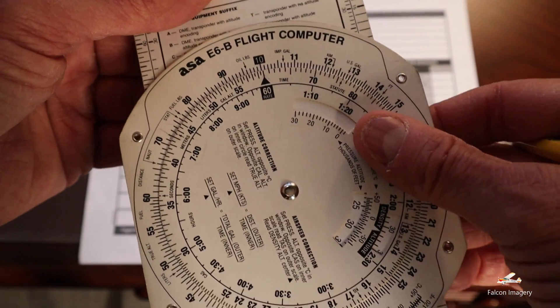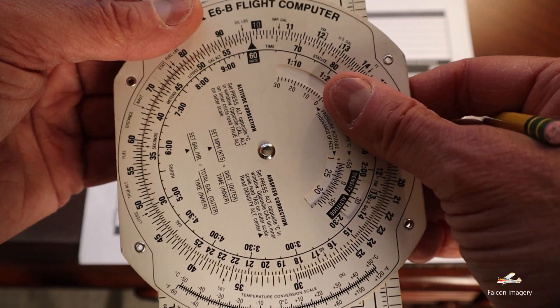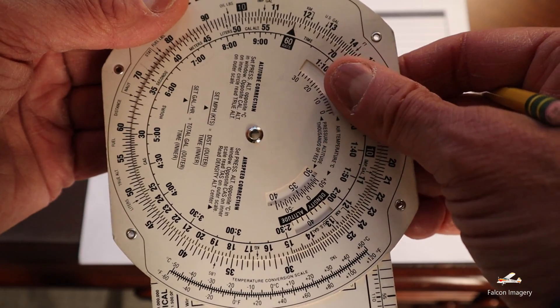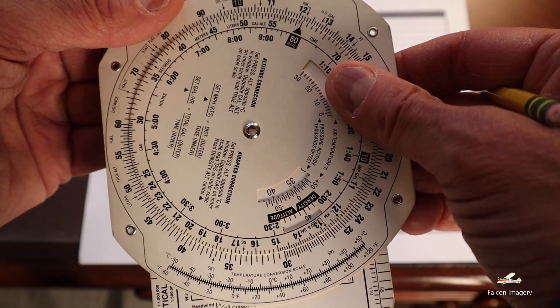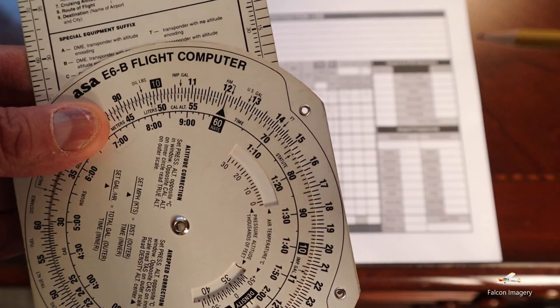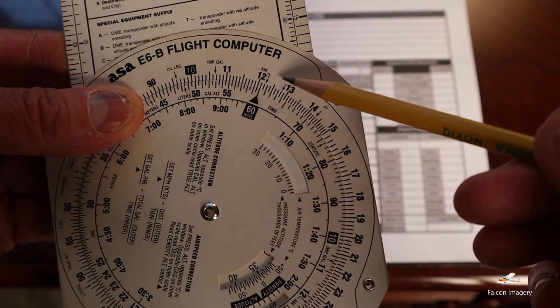In this scenario we are flying 121 knots ground speed, so we're going to put the arrow under 121 knots right there.